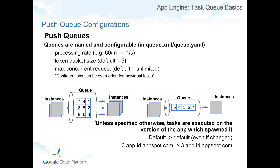By default, there is an unlimited concurrent request setting. If you have a lot of requests on the task queue, it's going to start saving them and try to process as many as possible. Unless you control it, it will start to spin up a lot of front-end instances. For example, you could have one queue that processes many requests quickly — think of it as a bigger pipe — whereas another queue might only process one concurrently, which is a smaller pipe. That funnels traffic one at a time and prevents more and more instances from being spun up.